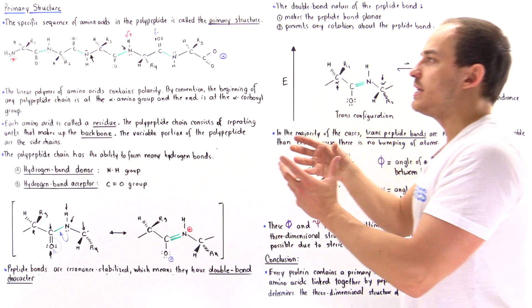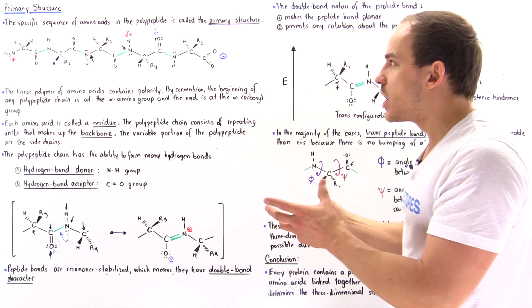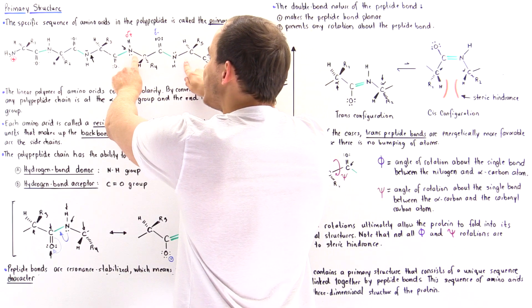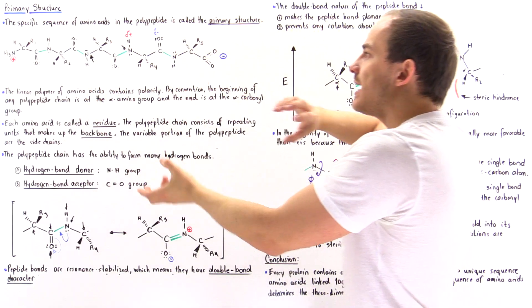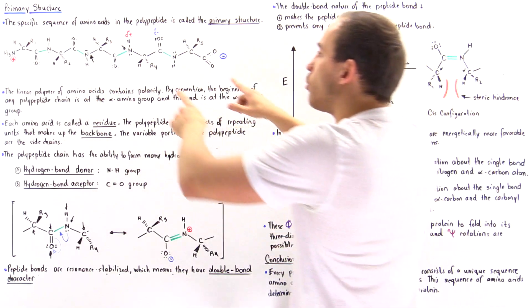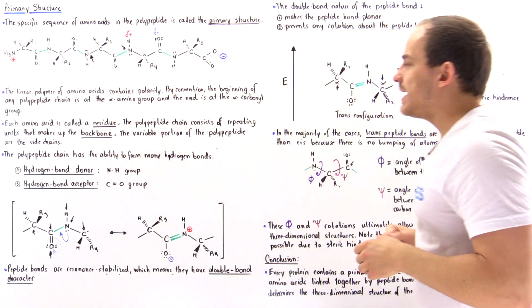Some of those rotations will actually lead to steric hindrance. So not all of these angles can actually rotate in specific ways, not all of these bonds can rotate in specific ways.